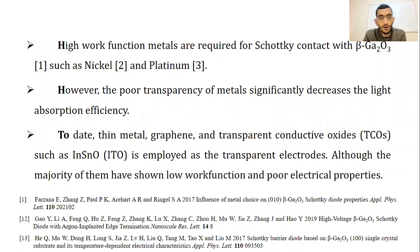Usually, high work-function metals are used for Schottky-contact formation with gallium oxide, such as nickel and platinum. However, the poor transparency of metals significantly decreases the light absorption efficiency.